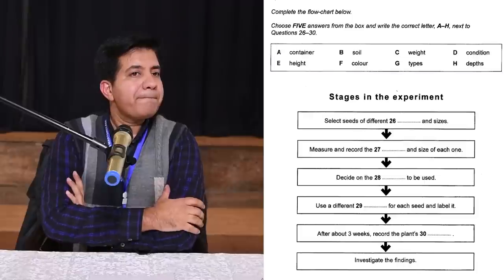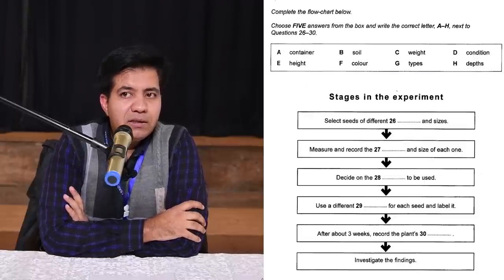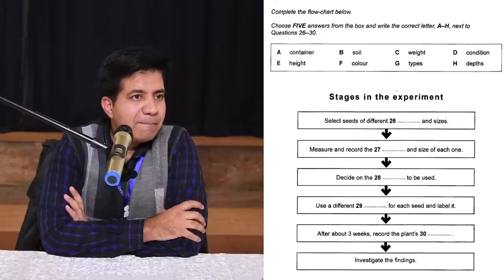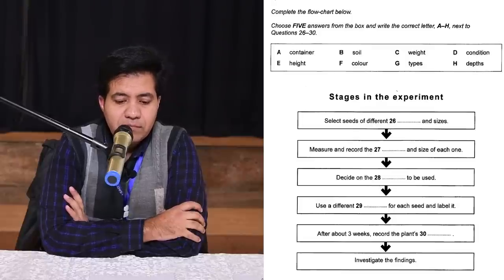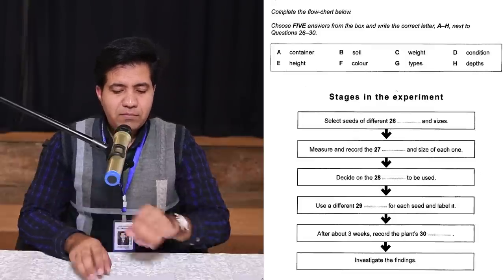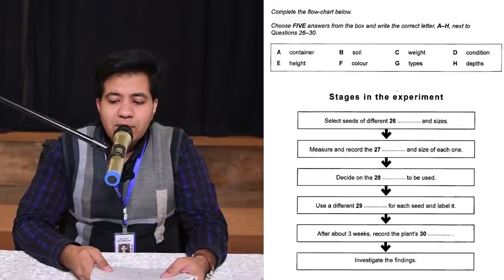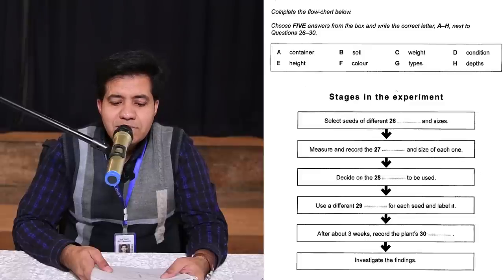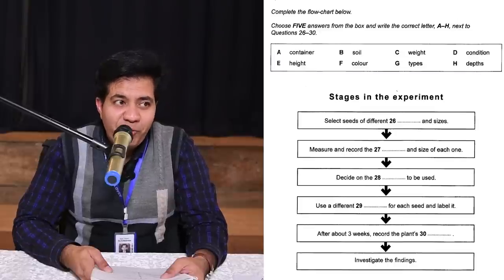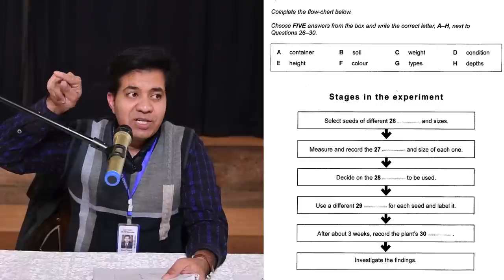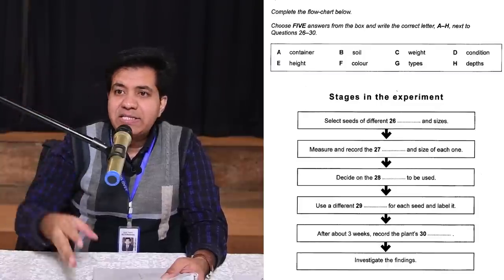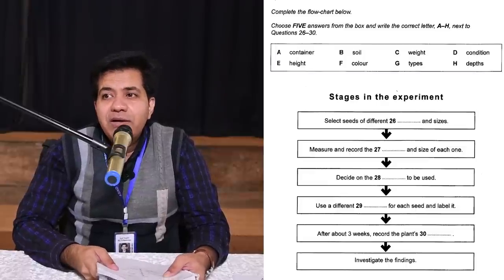Audio: 'Shall we have a look at the procedure for our experiment? We'll need to get going quite soon.' — 'The first thing we have to do is find our seeds — I think vegetable seeds would be best, and obviously they mustn't all be the same size.' — 'So how many sorts do we need?' — 'About four different ones, I think — that would be enough.' You heard 'sorts' — that means 'kinds/types' — so the answer is G (types).